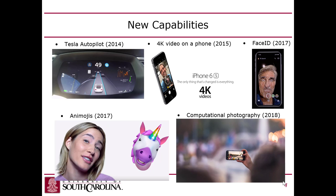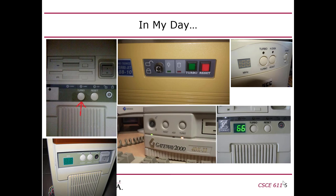The ability to solve problems is not the same as the capability of the computer. Up until 2014 there was no commercially available car that could drive itself until Tesla Autopilot. Up until 2015 it was impossible to do 4K video encoding on a phone. Up until 2017 it was impossible to do 3D facial ID on a phone or Animojis. Until 2018 there wasn't widespread use of computational photography. These are all capabilities that didn't exist before those dates — and that had to do with the hardware efficiency and speed.